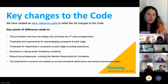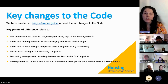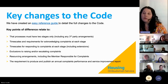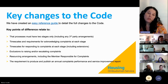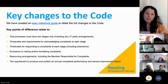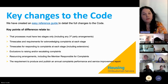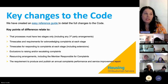Regarding timescales for responding at each stage: at stage one it is 10 working days from the date the complaint is acknowledged; at stage two it is 20 working days from the date the stage two is acknowledged. A landlord is permitted to extend a stage one complaint by a further 10 working days, and is permitted to extend the timescales at stage two by a further 20 working days.